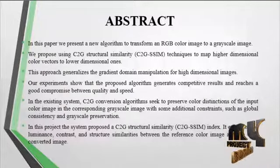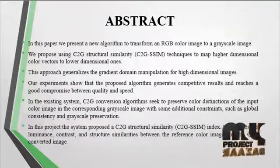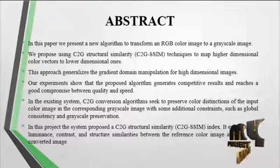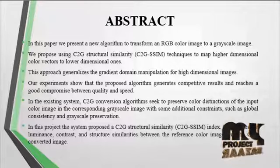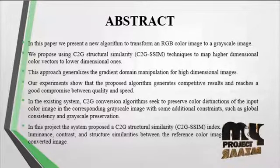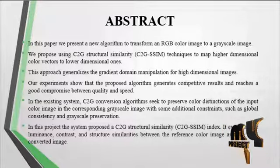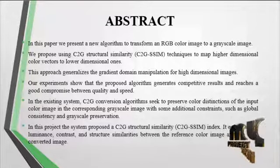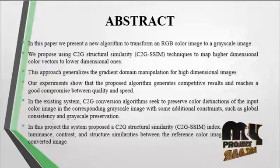Now we discuss the abstract for the process. In this paper we present a new algorithm to transform an RGB color image to a grayscale image. We propose using C2G, that is the color to gray structural similarity SSIM technique, to map higher dimensional color vectors to lower dimensional ones. This approach generalizes the gradient domain manipulates for high resolution images.